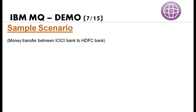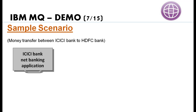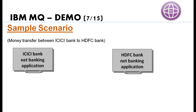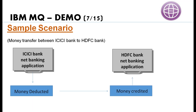I'm taking a sample scenario with two banks — ICSA Bank and HDFC Bank, two very famous banks in India — for a money transfer scenario between two different banks. A customer using the ICSA banking application needs to transfer a thousand bucks to an HDFC customer. The ICSA customer will enter details: the HDFC customer's bank account number, IFSC code, and how much money to transfer. Based on this information, the money will be debited from the ICSA Bank and credited to the HDFC banking application.